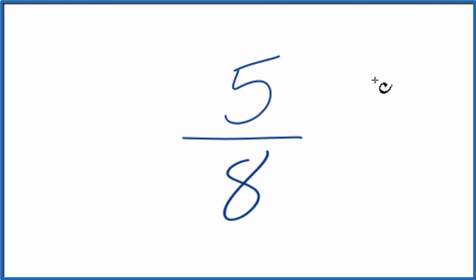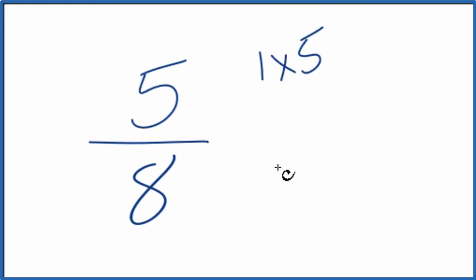So for 5, let's list the factors: 1 times 5. That's it. 8, we could have 1 times 8 and 2 times 4.